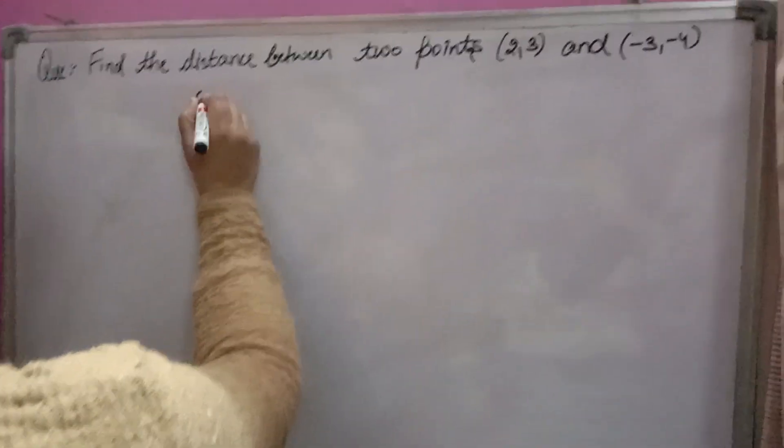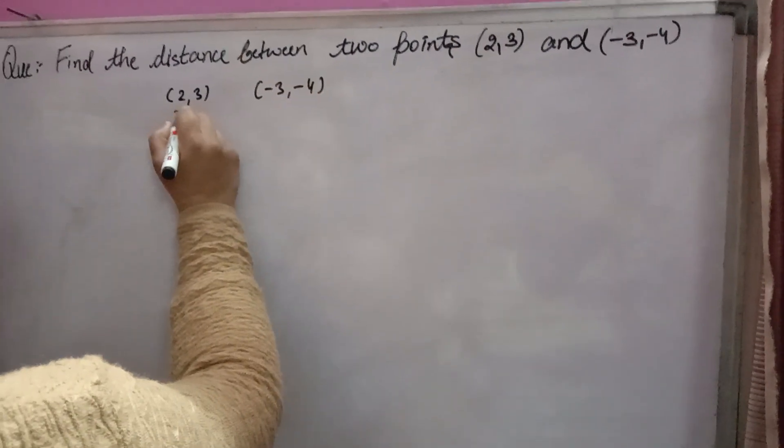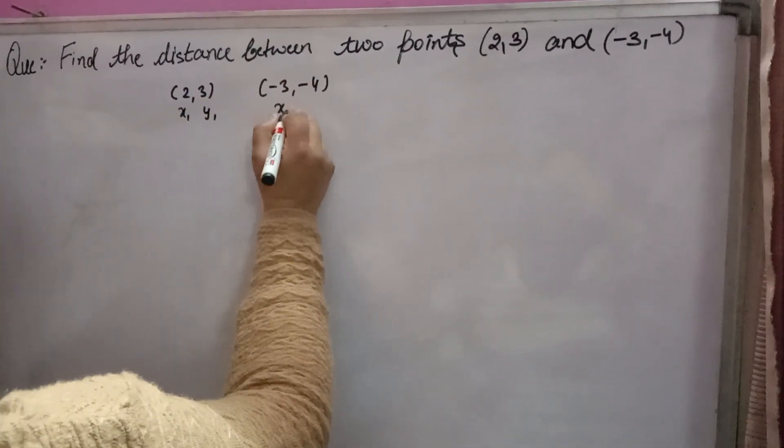Find the distance between two points. Two points are given, you have to find the distance between them. Suppose this is x1, this is y1, this is x2, this is y2.